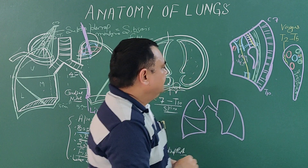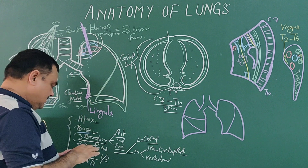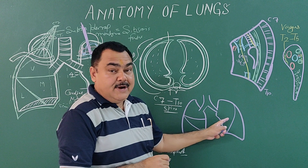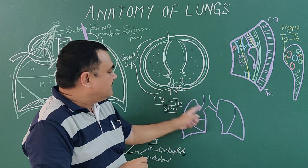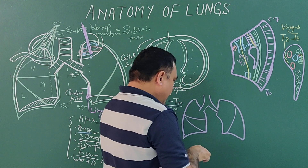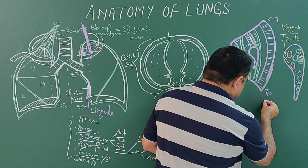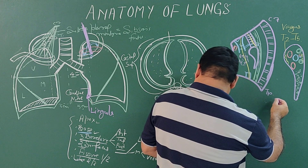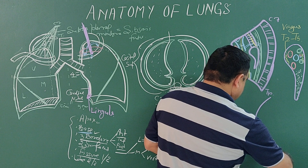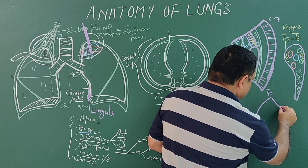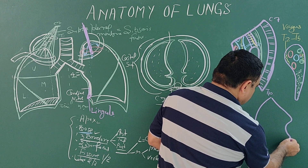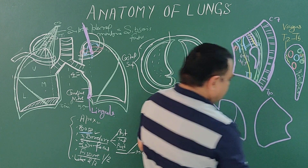Now you can see the mediastinal surface — the mediastinal surface of the left lung. If you turn the left lung, you will find here the position of the left lung.